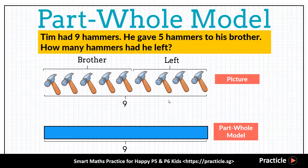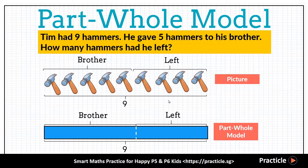Now, what's the part then? We get the parts by splitting the whole up. Since we know that Tim gave 5 hammers to his brother, and he had some number of hammers left, what we can do is split this rectangle into two parts — one part that represents the 5 hammers, and the other part that represents the leftover hammers. We put in the value if we know it, and if we don't, we just put a question mark to represent it.